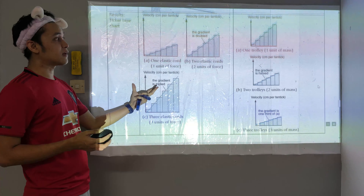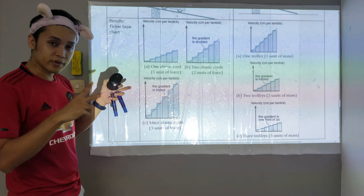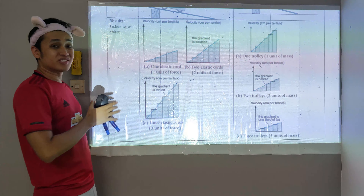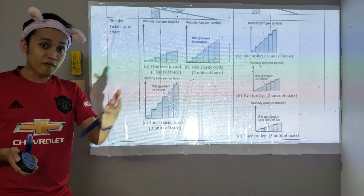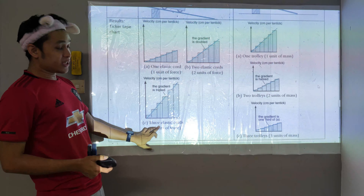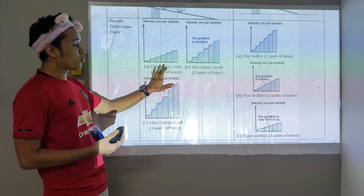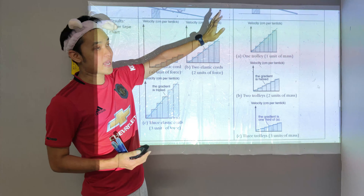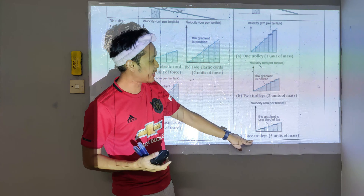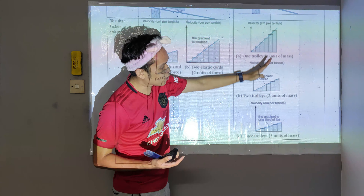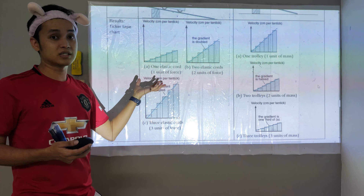Based on the ticker tape experiment, you take the tape, cut it into portions, and stick them — you'll be able to see the relationship. With one rubber band: lower acceleration. With three rubber bands: higher velocity, meaning higher acceleration. For the relationship between mass and acceleration: with one trolley versus three trolleys — because the heavier you are, the slower you go — the graph gradient is getting lower and lower. This is basically the experiment to study force, mass, and acceleration.